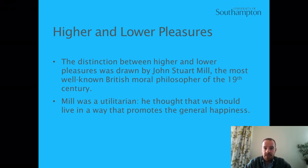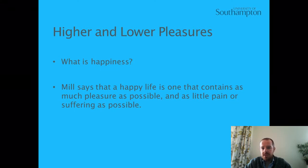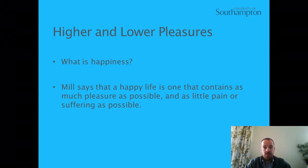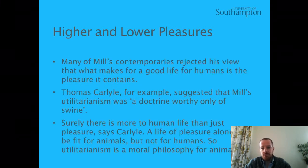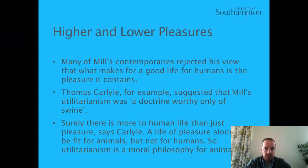Mill was a utilitarian. He thought that we should live in whatever way best promotes the general happiness. Now what is happiness? Mill says that a happy life is one that contains as much pleasure as possible and as little pain or suffering as possible. Many of Mill's contemporaries rejected his view that what makes for a good life for humans is the pleasure that it contains.